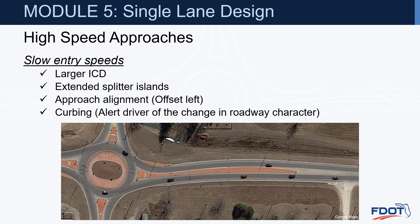We want slow entry speeds. On higher-speed approaches, we'll often have more right-of-way available, so we can use a larger ICD. We'll look to extend the splitter islands further to alert the driver that an intersection is coming up and they need to reduce speed. The offset left approach alignment is another way to help slow those entry speeds. Curbing alerts the driver to the change in roadway character — that there's an intersection and they need to slow down.